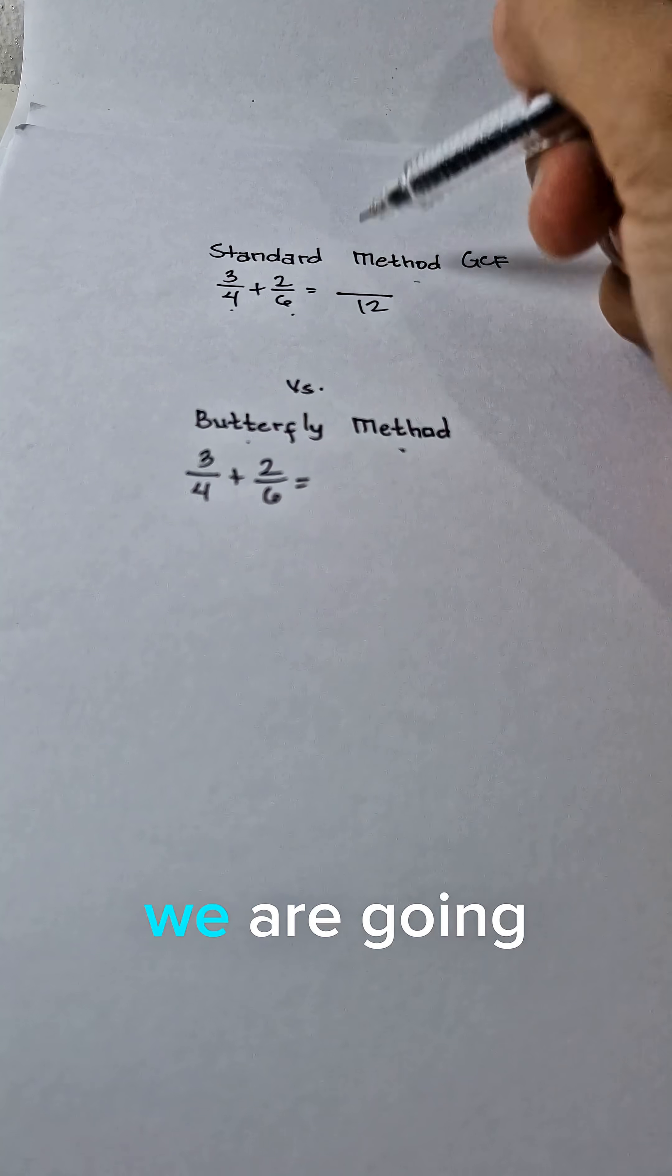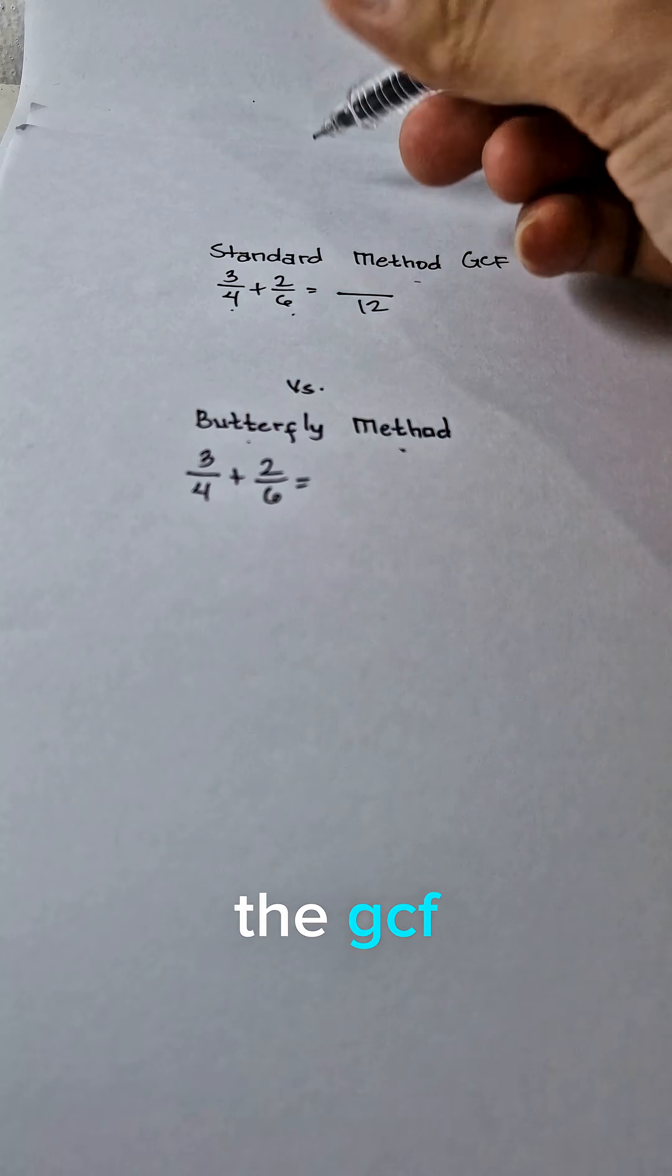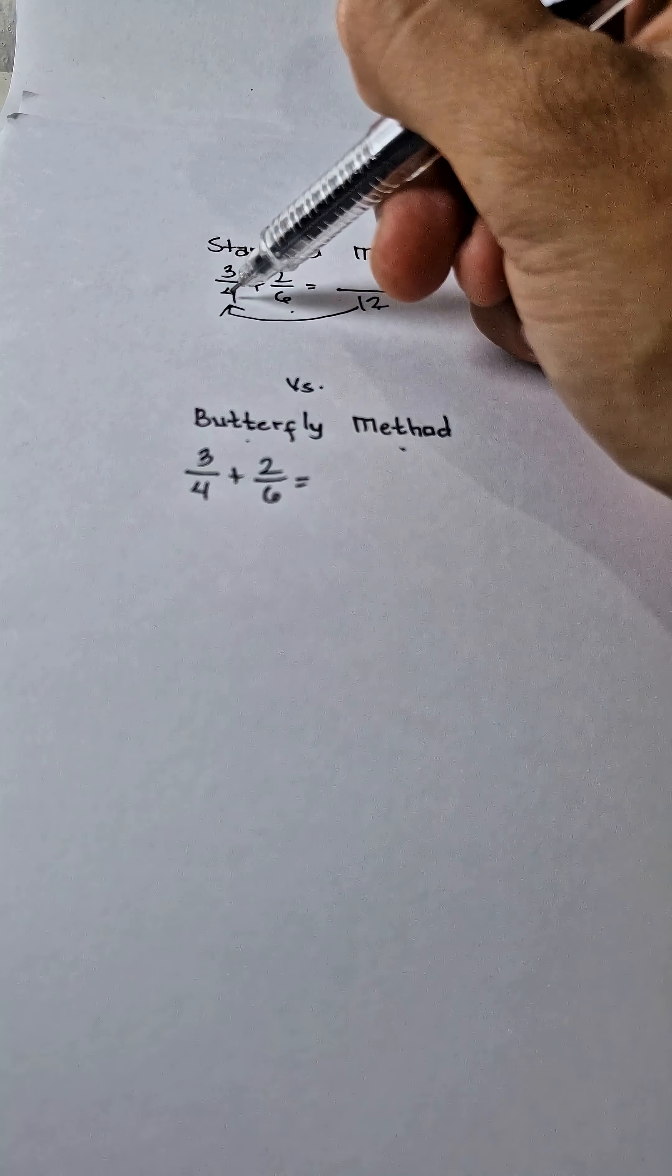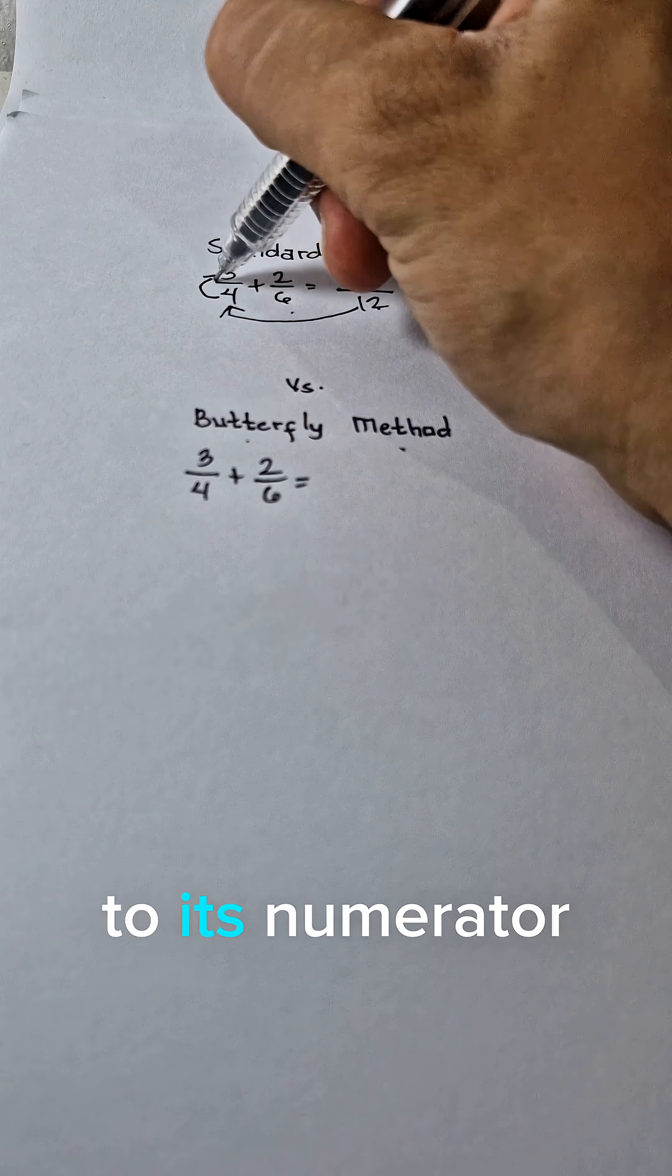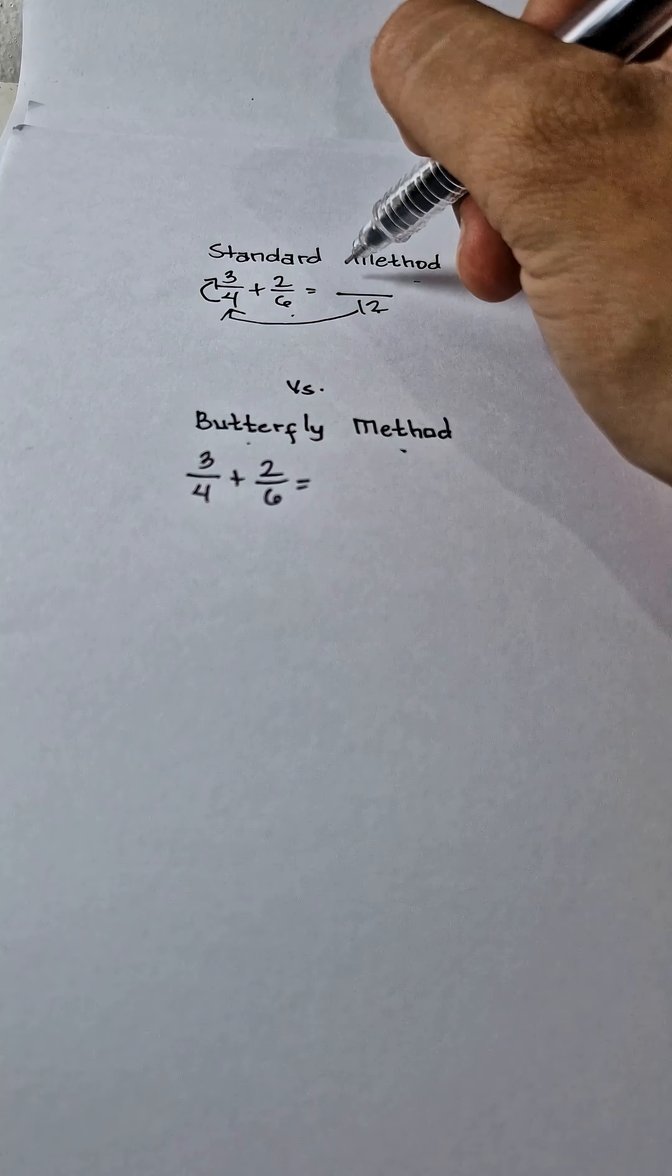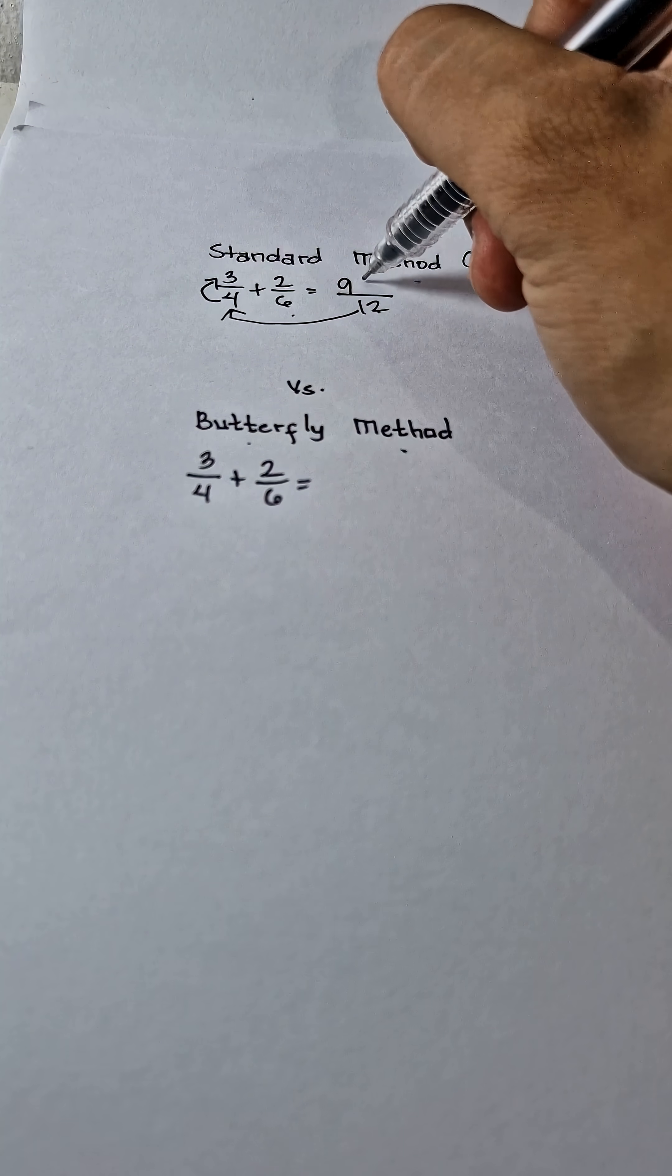And then the next thing is you are going to divide the GCF to the denominator of the first fraction. 12 divided by 4 is 3. And then we are going to multiply to its numerator, which is 3. 3 times 3 is 9. Since it is addition, copy the operation.